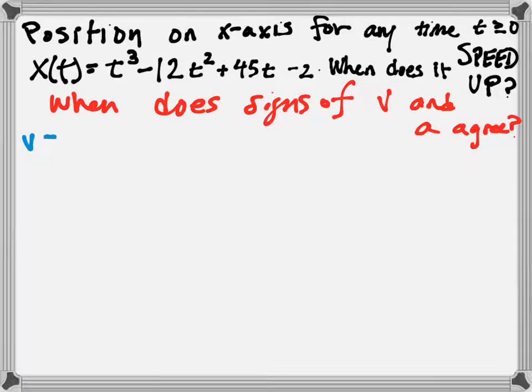So the velocity function here, which is defined as the rate of change of position or the derivative of position, would be x prime. So let's go ahead and take that. That would be 3t² - 24t + 45 plus 0 using the power rule.